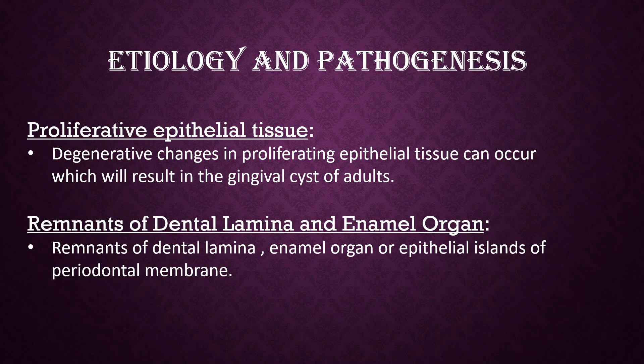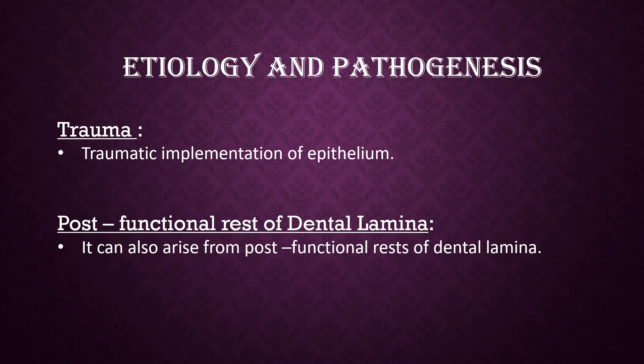Etiology and Pathogenesis. First, proliferative epithelial tissue — digitative changes in proliferating epithelial tissue can occur which will result in gingival cyst of adults. Second, remnants of dental lamina and enamel organ — remnants of dental lamina and enamel organ, which are epithelial islands of the periodontal membrane, can also result in gingival cyst of adults. Third, trauma — traumatic implantation of epithelium is also a causative factor.